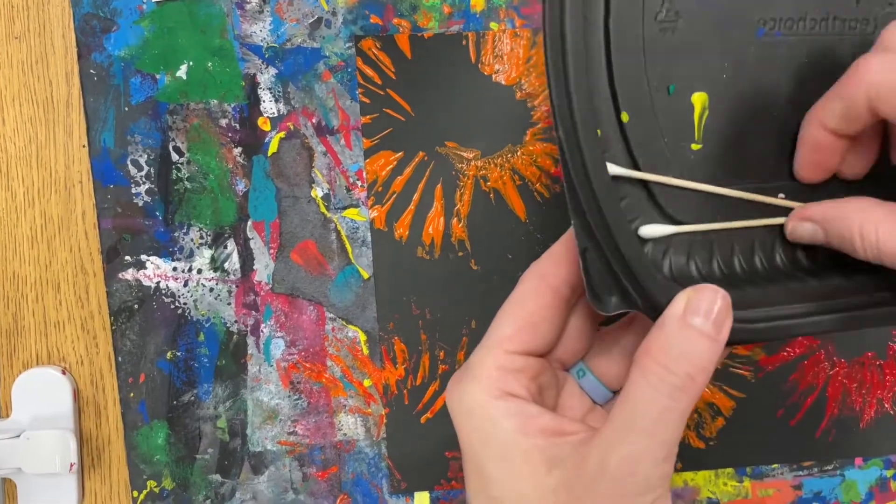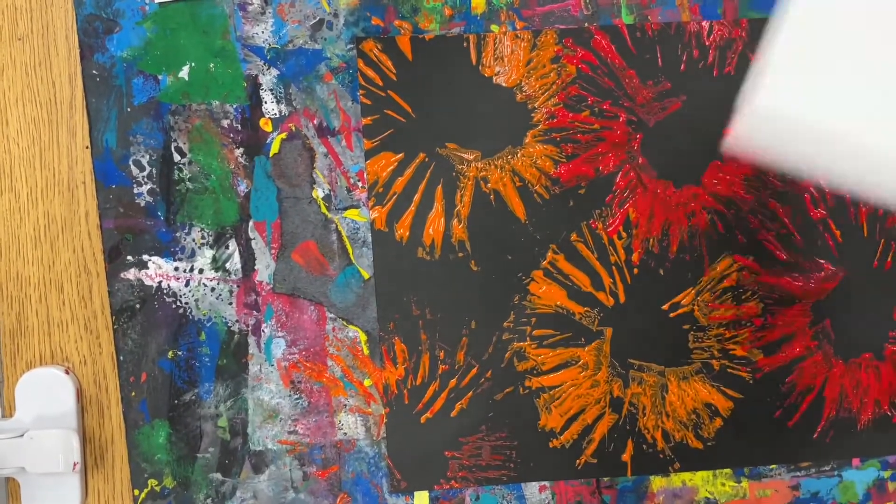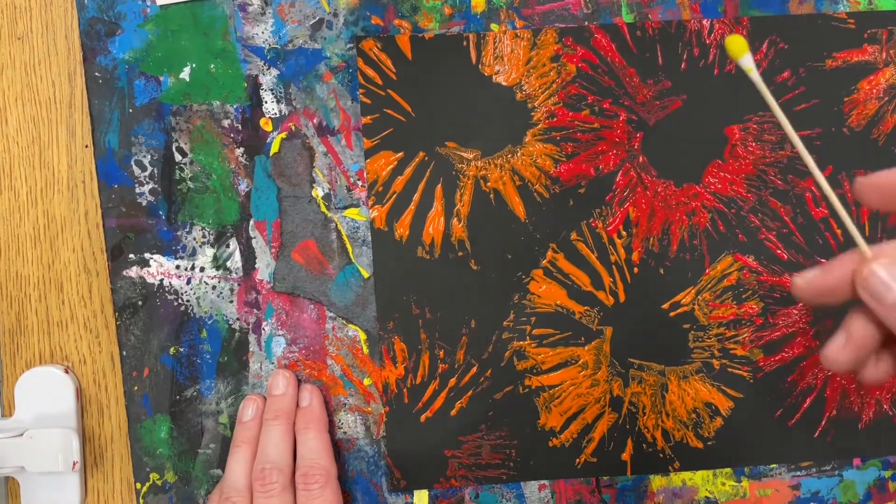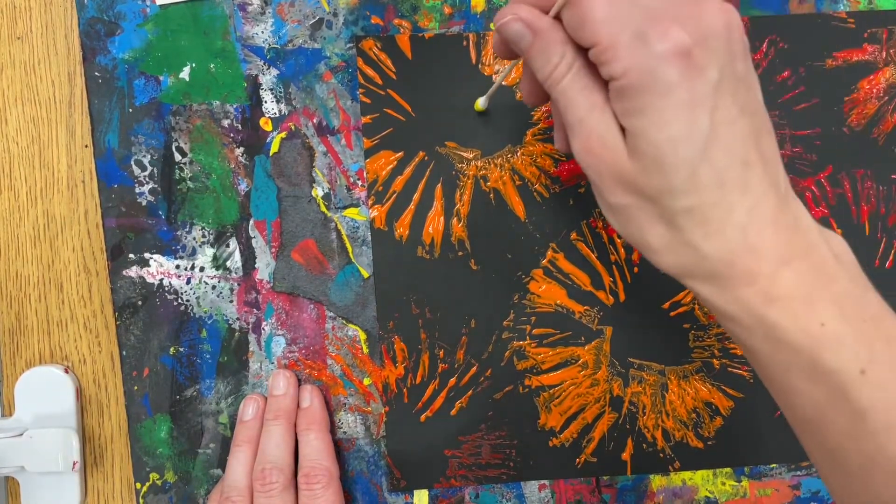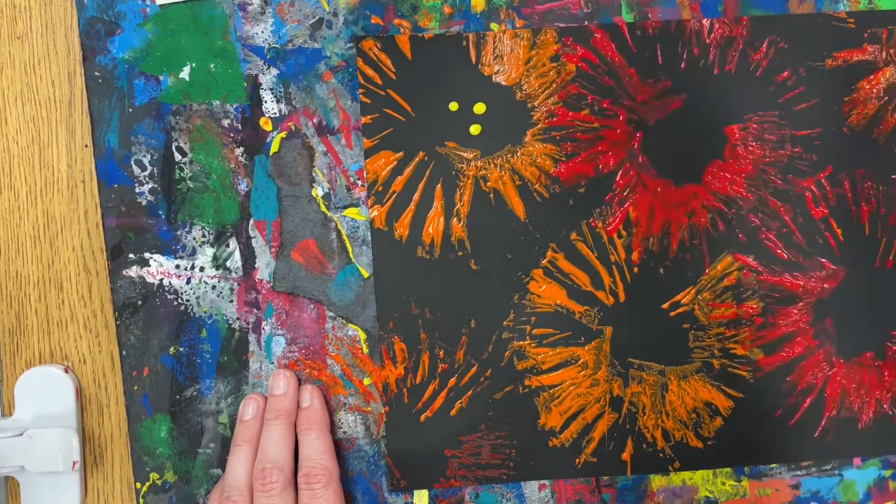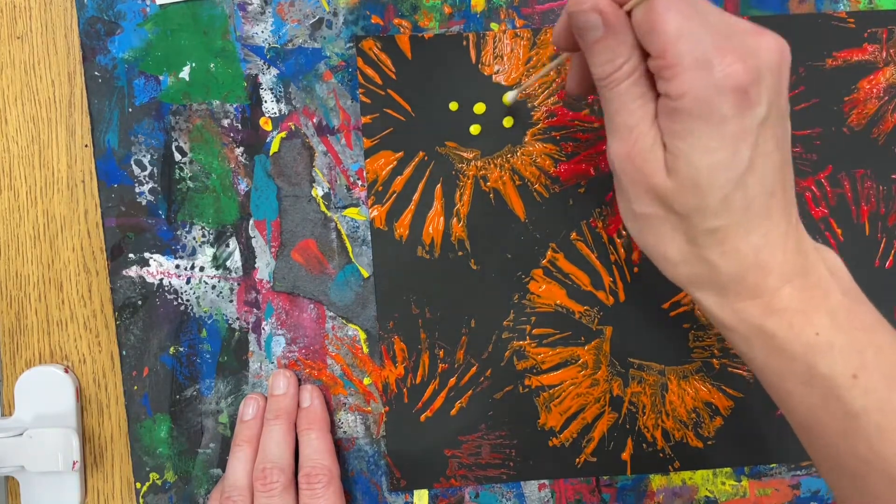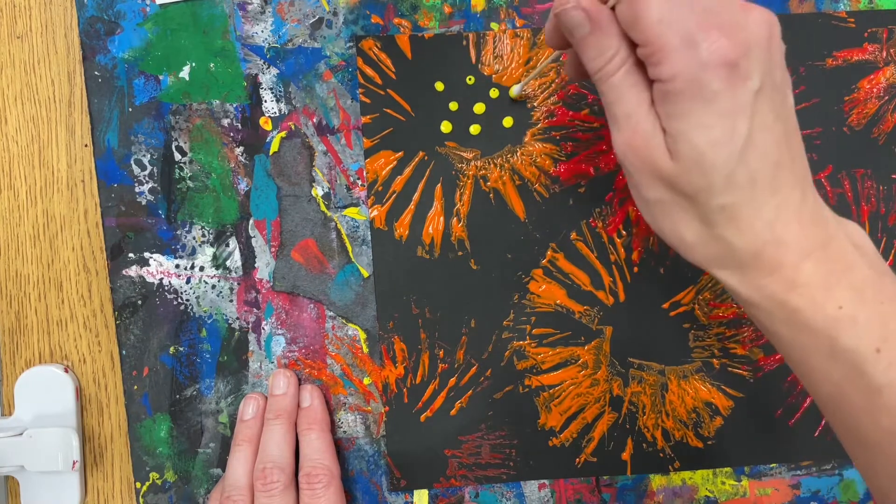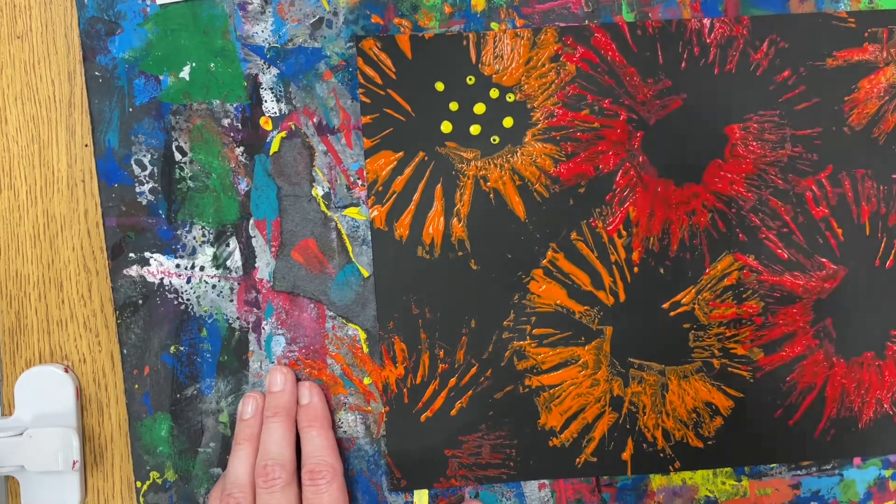For the final step, you'll use a cotton swab to gently dot yellow dots in the middle of each of your flowers. I would say about 10 dots is a good amount of dots to put in there. Make sure you're being gentle and make sure that you're dipping your cotton swab so you don't run out of paint.